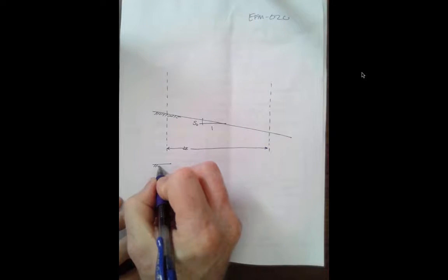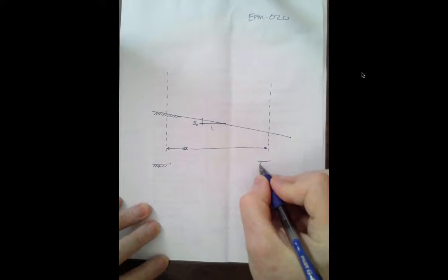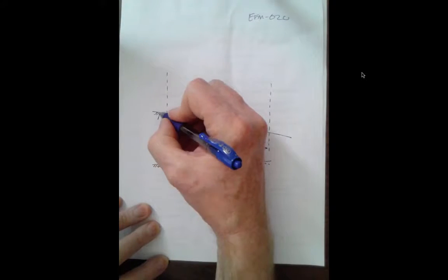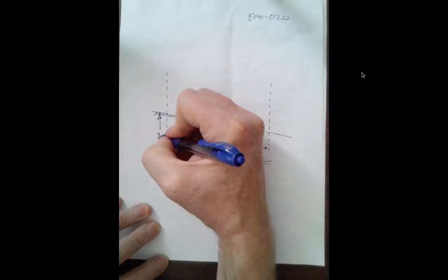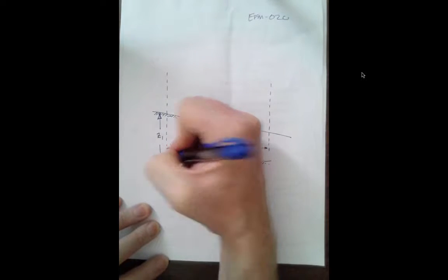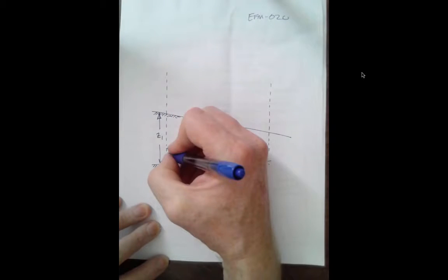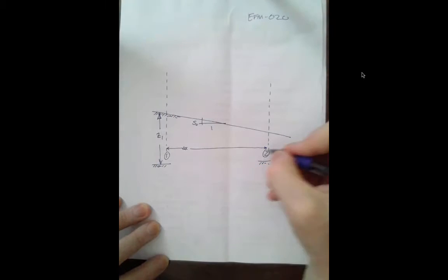We have some elevation datum here, same datum here. So we measure from elevation zero to the bottom of the channel. This is station one and this is station two.